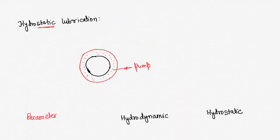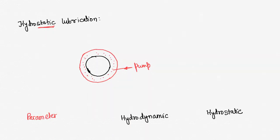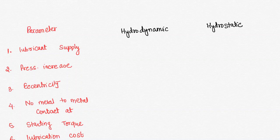When we talk about hydrostatic lubrication, as the name suggests it is mainly about the static or stationary condition. The gap between shaft and bearing is maintained by an external pressure. Externally pressurized lubrication is injected using a pump, and that pressure helps in lifting the shaft.